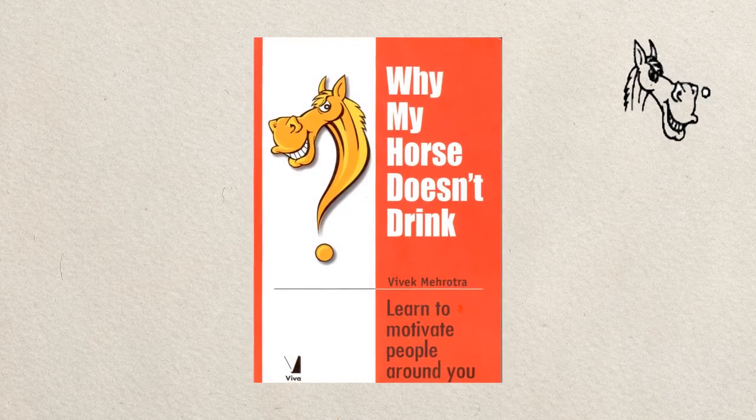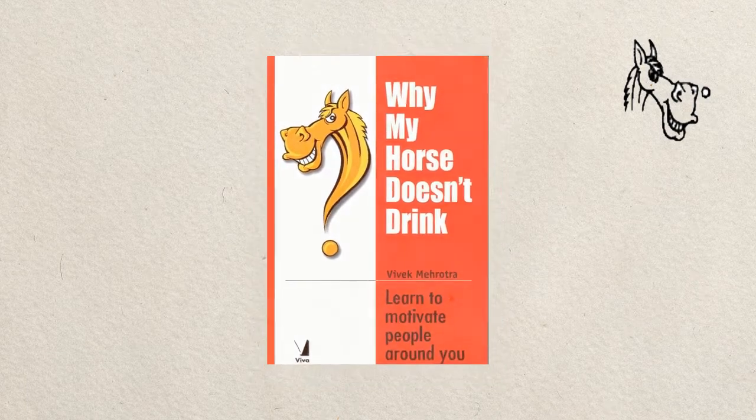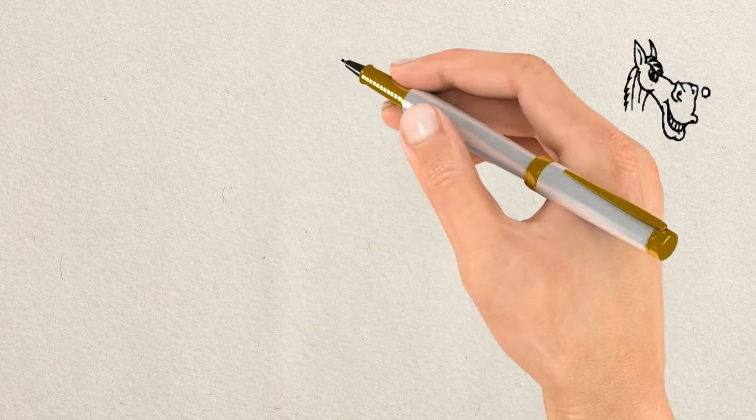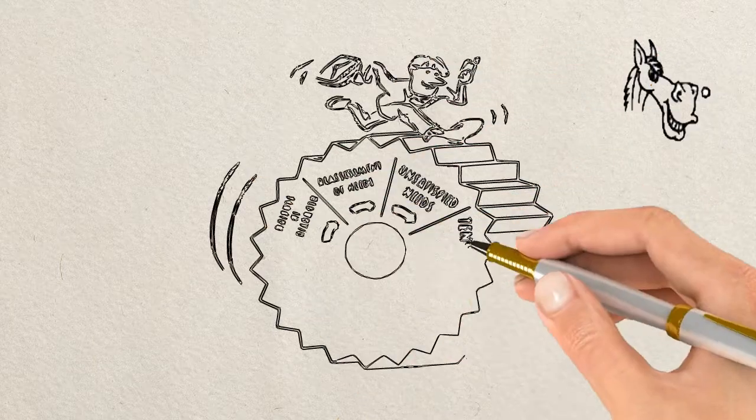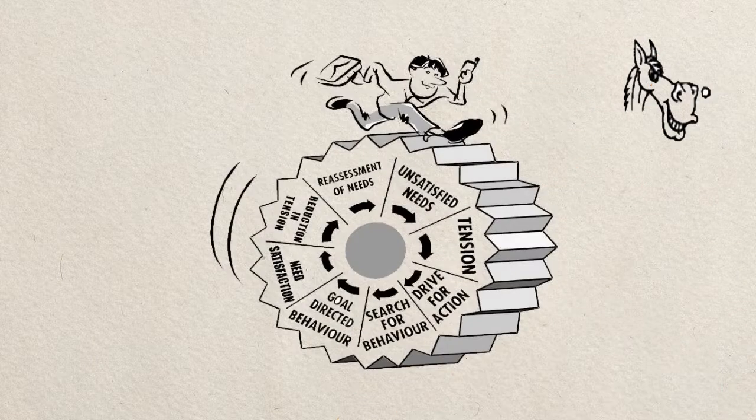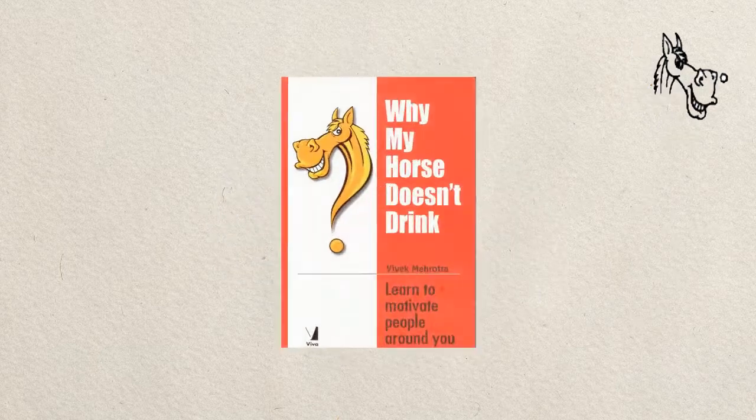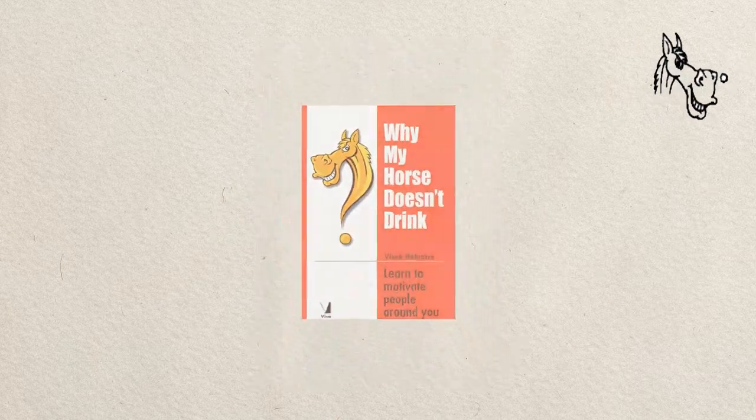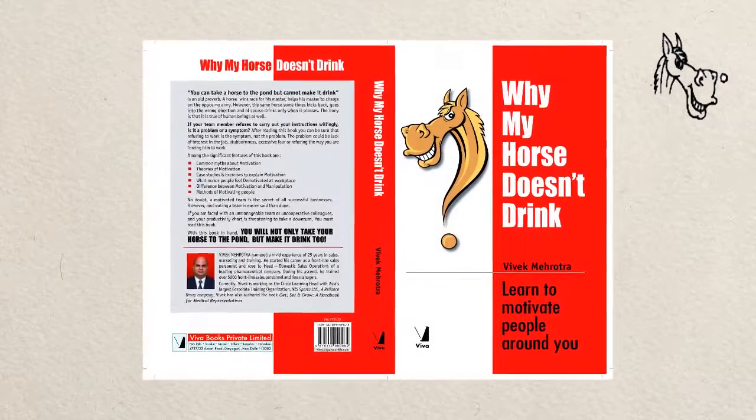Apart from answering the above questions, Why My Horse Doesn't Drink will help you understand the basic human needs which keep driving a person towards the goal one has set for oneself. The book is published by Viva Books from India in English and Jaleel Publications from UAE in Arabic.